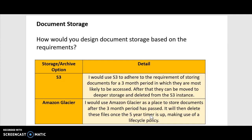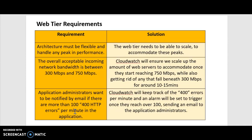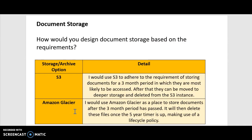In terms of document storage, they ask for a three-month period in which it is most likely to be accessed — I would put that into an S3 instance to adhere to this. And then after the three-month period is up, it would be moved into deeper storage in Amazon Glacier, where it'll be kept for five years. When the five years are up, it'll be deleted. That would be handled using a lifecycle policy.